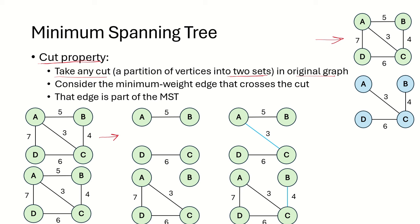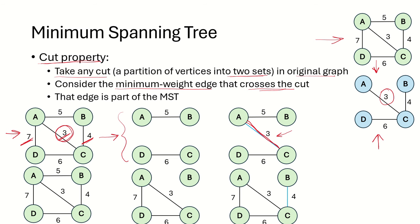Between these two sets, the minimum weight edge that crosses the cut will always be part of the MST. Looking at the edges connecting the two sets — this edge, this edge, or this edge — the one with the minimum weight among them will definitely be included in the MST. We can verify this by checking the known MST for this graph.